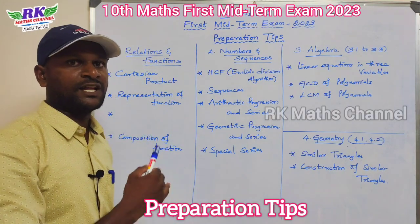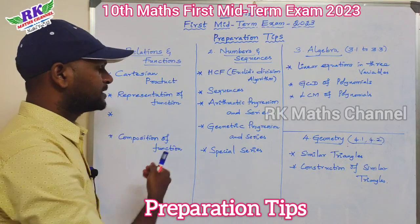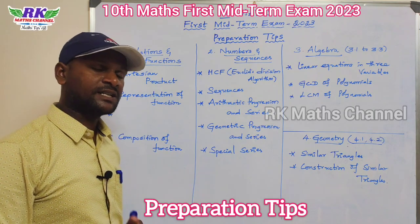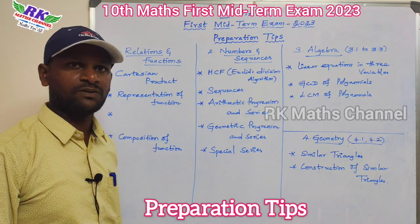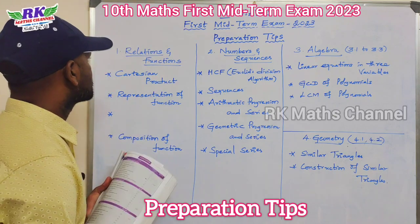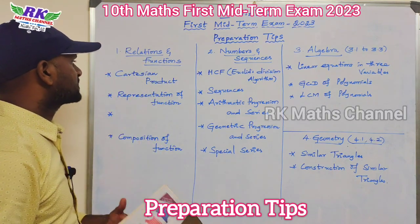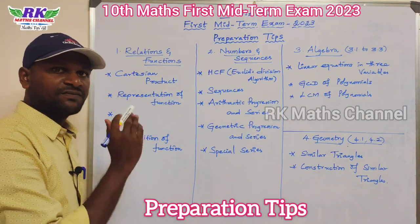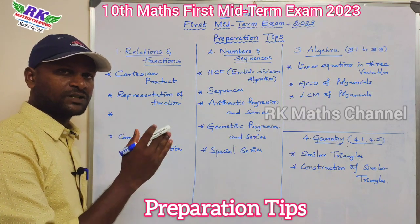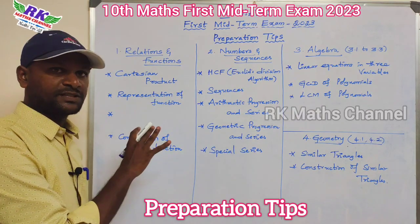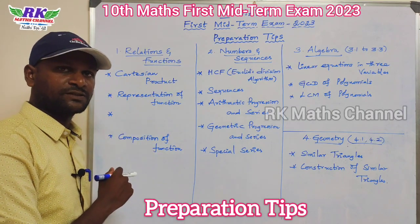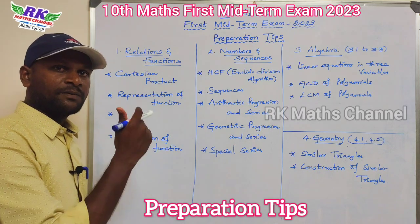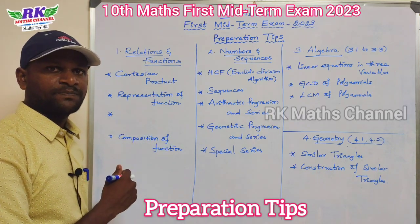How do we learn and where do we concentrate? The first topic is very easy: Cartesian product, from the first exercise. Example 1.3 is important. If you look at exercise 1.1, problem numbers 5, 6, and 7 are important.